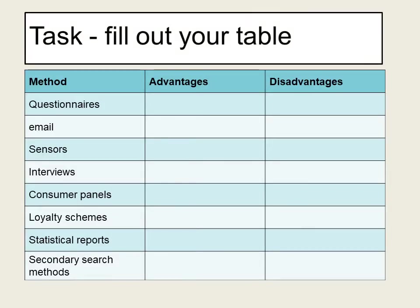Let's go back to your table that you've drawn, or you can just write a list. What I'd like you to do now is fill out the advantages and disadvantages of each data collection method. We've written down all the methods down the left hand side and then we're going to write about each one on the right — just one advantage and one disadvantage for each. Pause the video here and write down the methods down the left hand side.